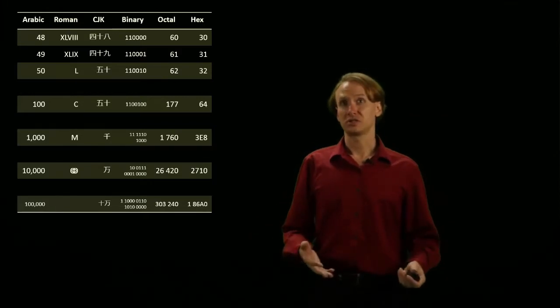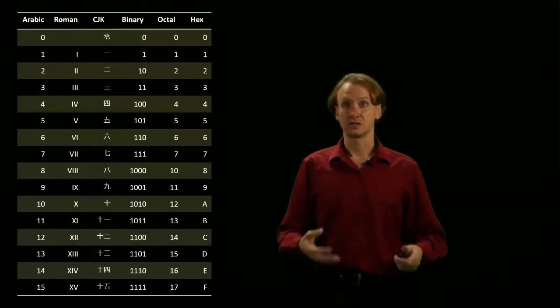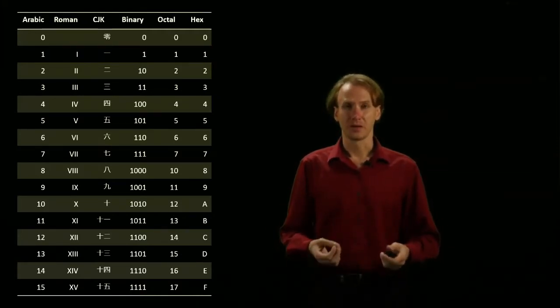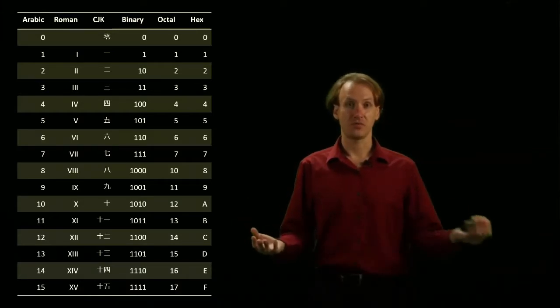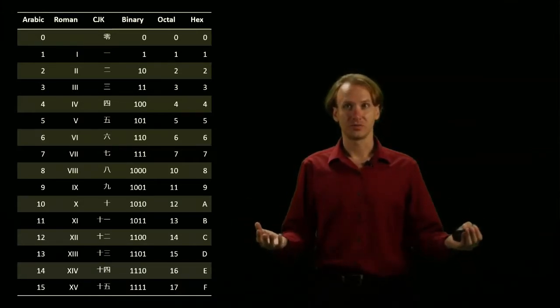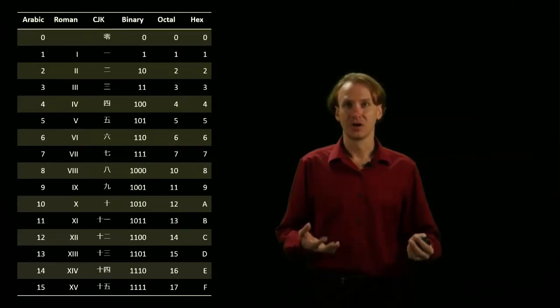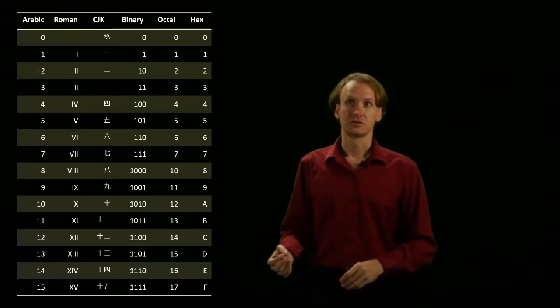So in our binary number system, we've got the same idea. We've got a number line here, it starts at 0, counts up by 1 at a time. But this time I only have 2 symbols to work with: I have 0 and I have 1. So once I run out of 1s in my number, I have to increase my next binary place.